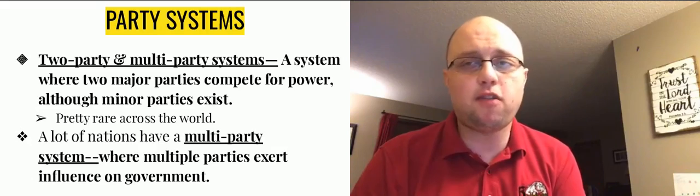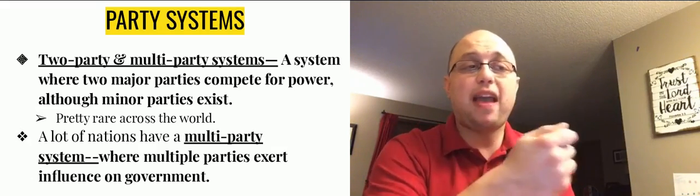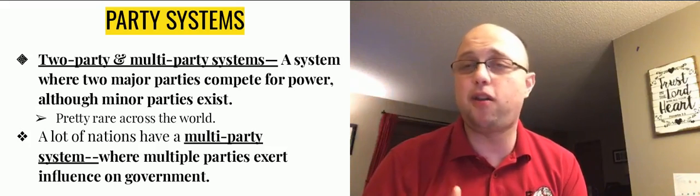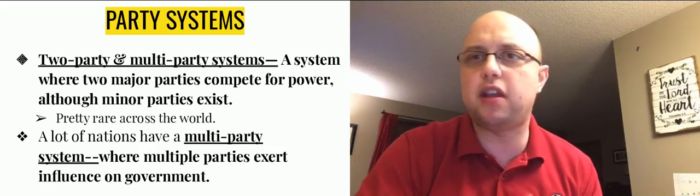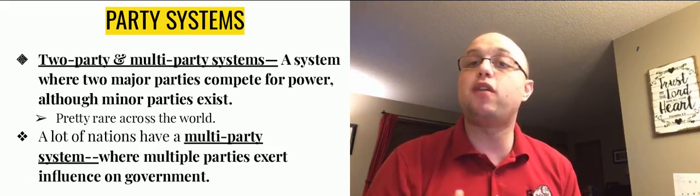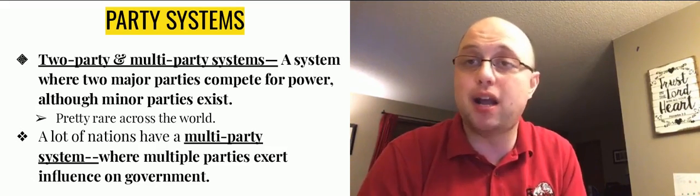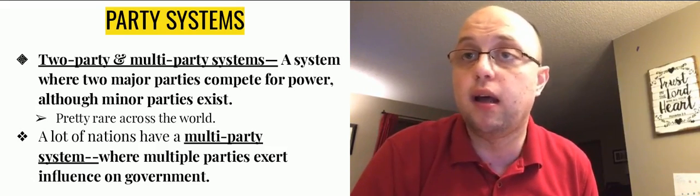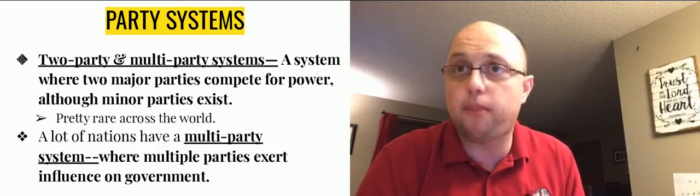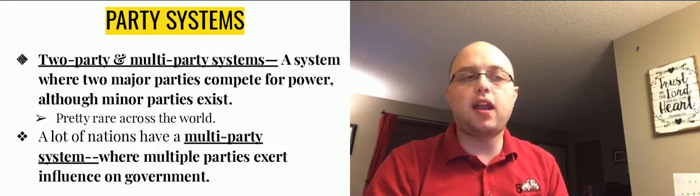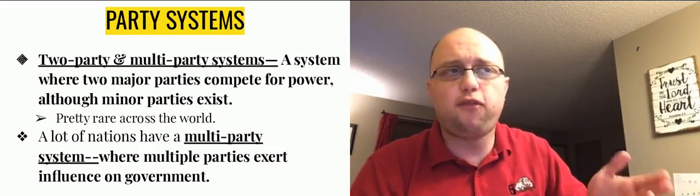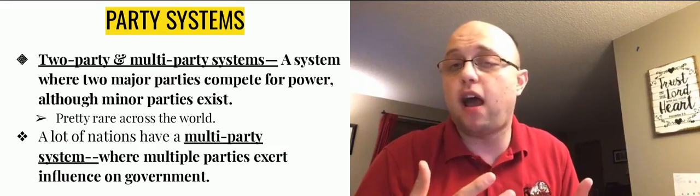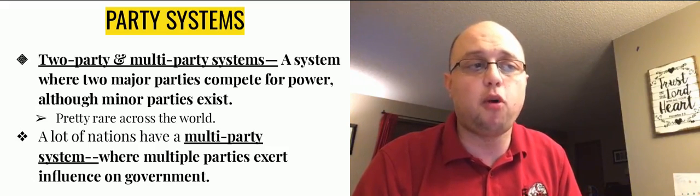Two-party systems are actually pretty rare across the world. Most countries have a multi-party system, meaning there are many parties — in some countries as many as 50 different parties on the ballot. A lot of countries in Europe do this: the United Kingdom, Israel, Germany. What you're voting for is the party, and then that party elects the government. For example, if you're in the Labour Party in the United Kingdom and your party gets the majority of the votes, then you decide the prime minister. Essentially you're voting for a party; you could have 40% of the government as one party, 20% another, 10% another.